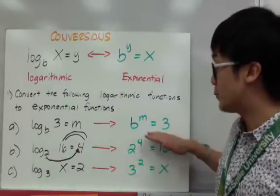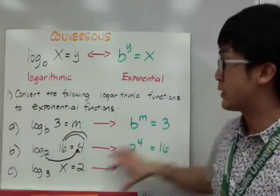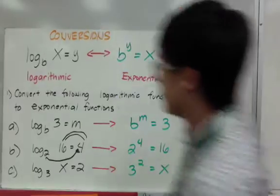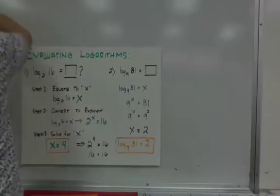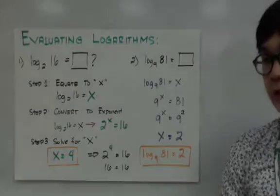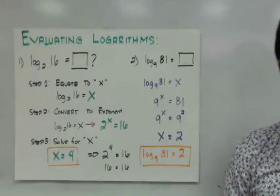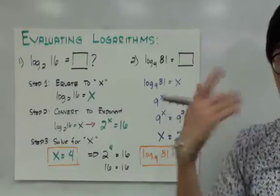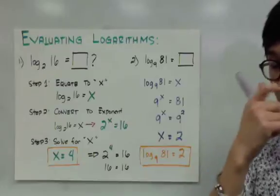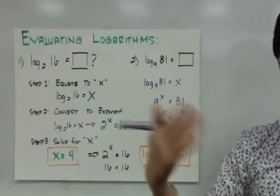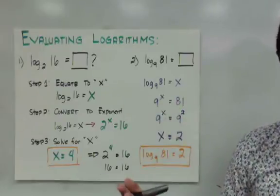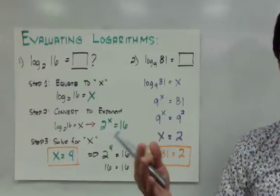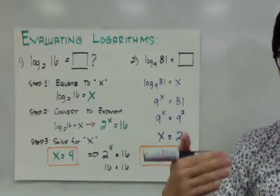To convert an exponential to logarithm, you just need to do it in reverse, and we'll have more examples of that later on. It's easier to work with exponents because we are so familiar with exponential notation — whenever we see 2 squared, we know it's 4, or 2 raised to the third power, we know it's 2 times 2 times 2, which is 8.